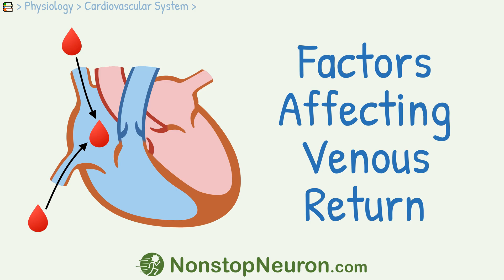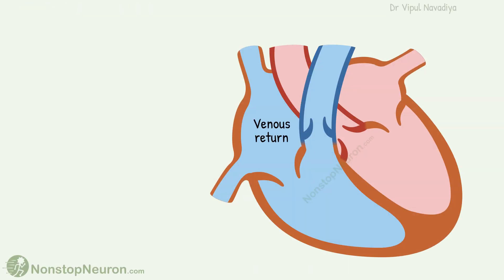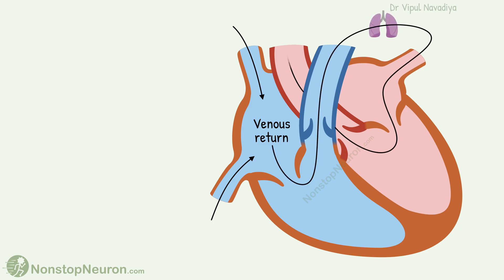In this video we will talk about the factors affecting venous return. Venous return is the volume of blood that returns to the heart every minute. It's important to understand factors affecting venous return because venous return in turn is one of the factors that affect cardiac output.